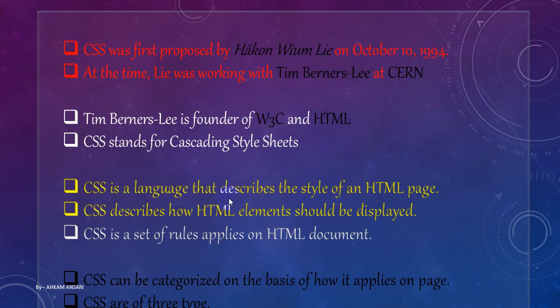CSS is a language that describes the style of an HTML page. CSS is not an independent language — CSS works with HTML alone. CSS is nothing alone. CSS is used to apply some effect, some style on HTML pages. That is why I am saying CSS and HTML work at the same time. You will never see any website in which only CSS is available, because CSS is a tool which applies on HTML pages.